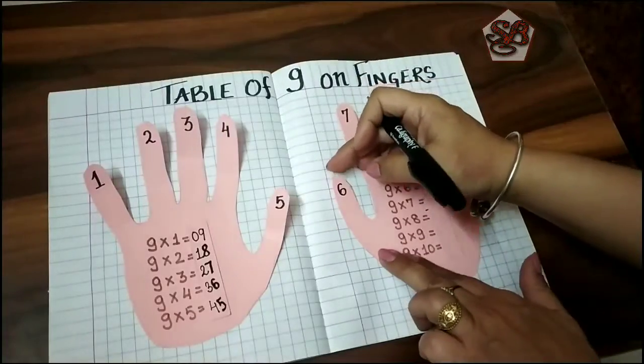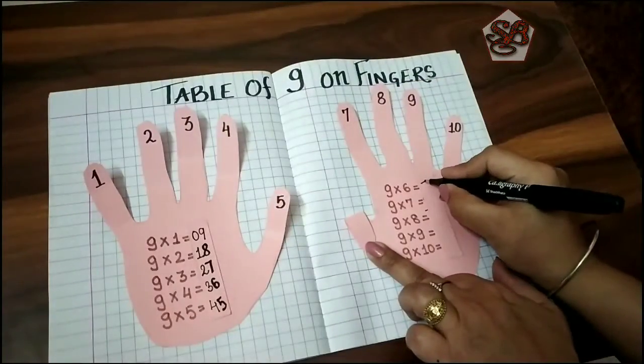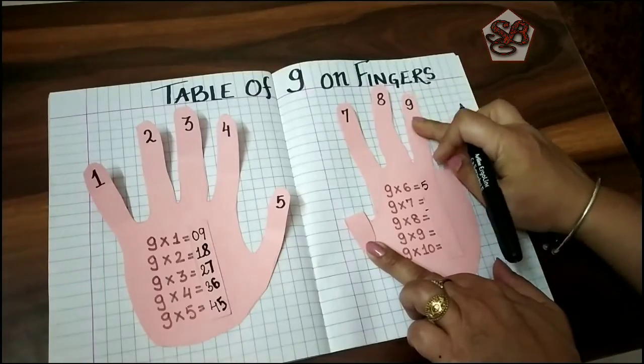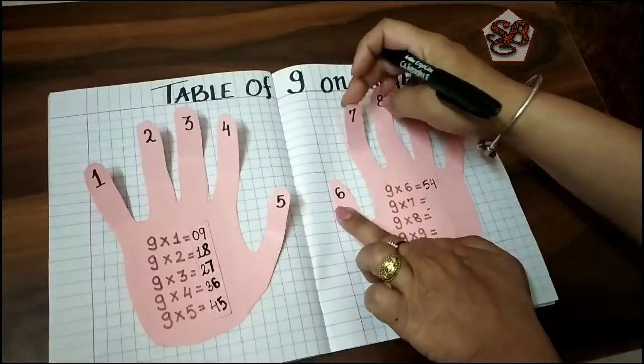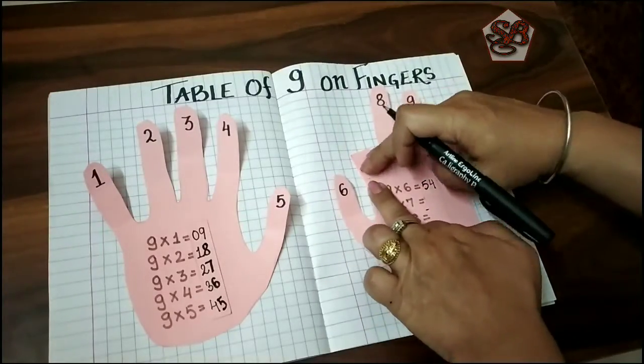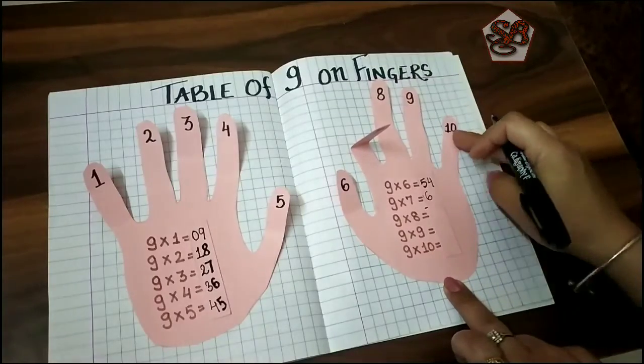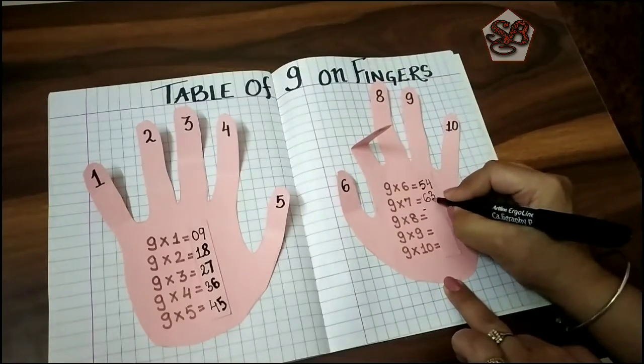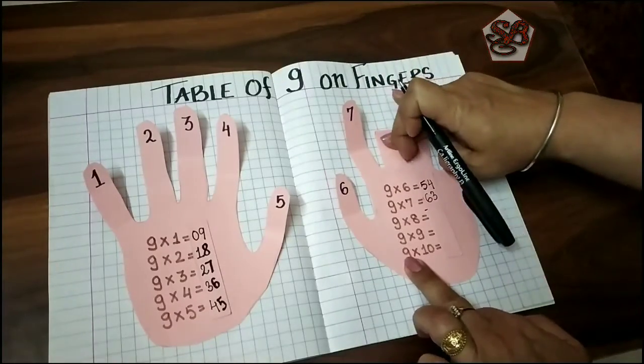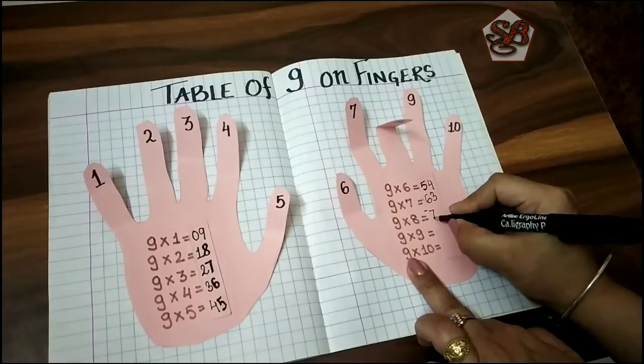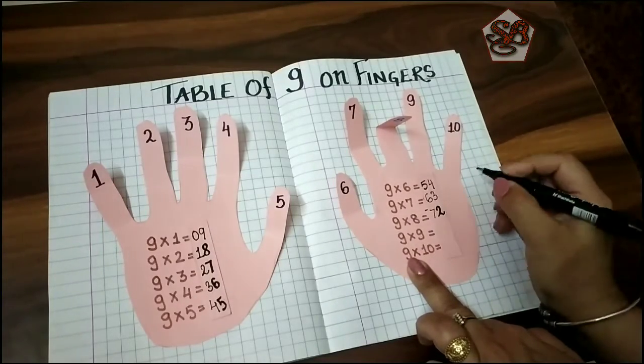Nine sixes are fifty-four. Nine sevens are sixty-three. Nine eights are seven and two. Seventy-two.